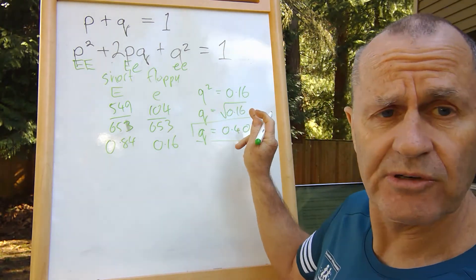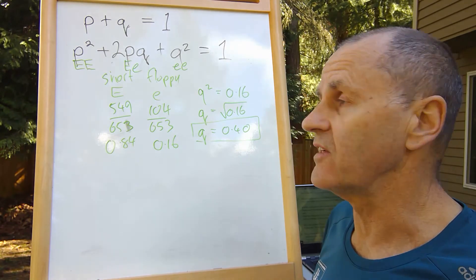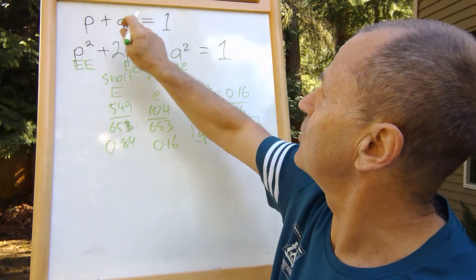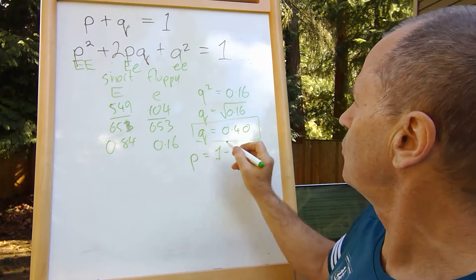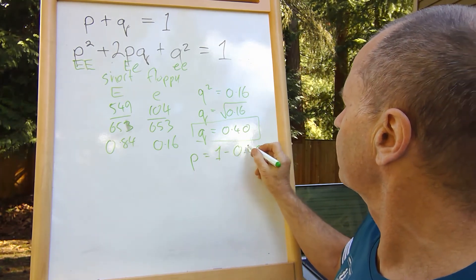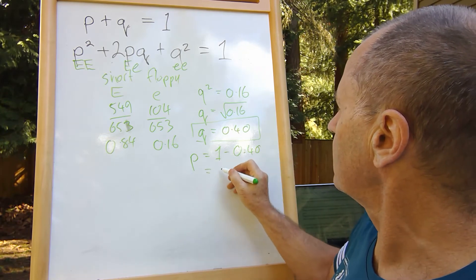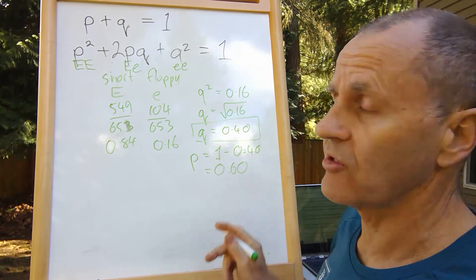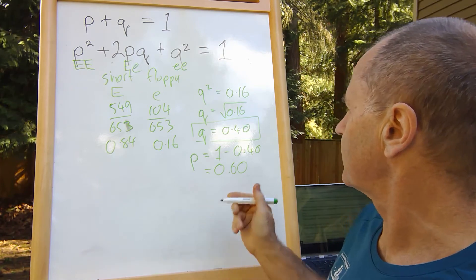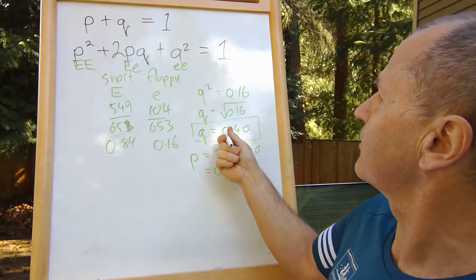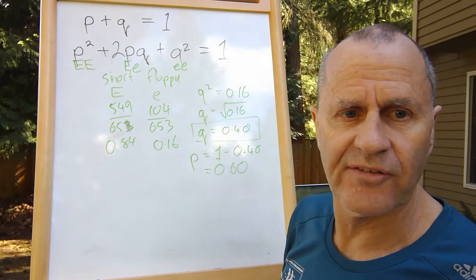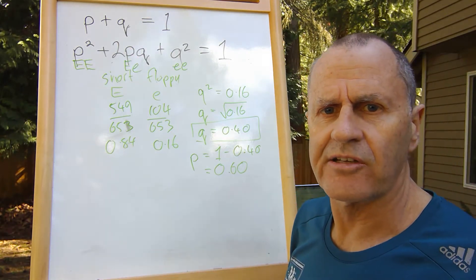Once we've got q, we can fairly easily find p because p plus q equals 1. So p equals 1 minus q. If q is 0.4, then p is 0.60.